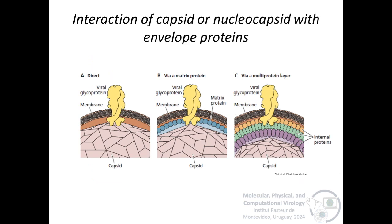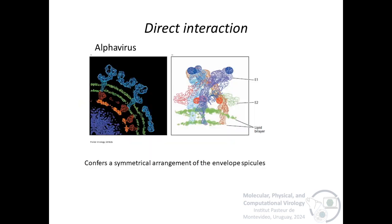There are different forms of interaction between capsid and envelope proteins. This interaction can be direct through a matrix protein or via multiprotein layer. This is an example of a direct interaction. This interaction results in a symmetrical arrangement of the envelope glycoproteins. The capsid of alphavirus is T equals 4 and consists of 240 units. And the outer glycoprotein layer also contains 240 unit copies of the envelope proteins E1 and E2, which form heterodimers and are also organized in a T equals 4 icosahedral shell. And for that reason, direct interaction confers a symmetrical arrangement of the envelope spikes.